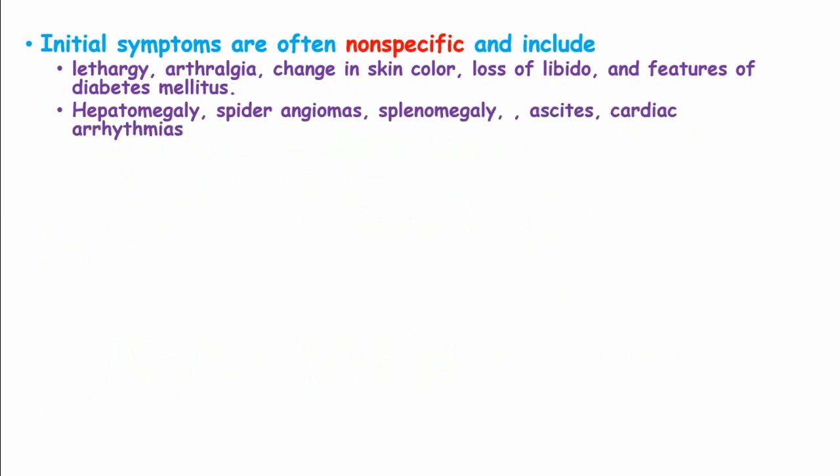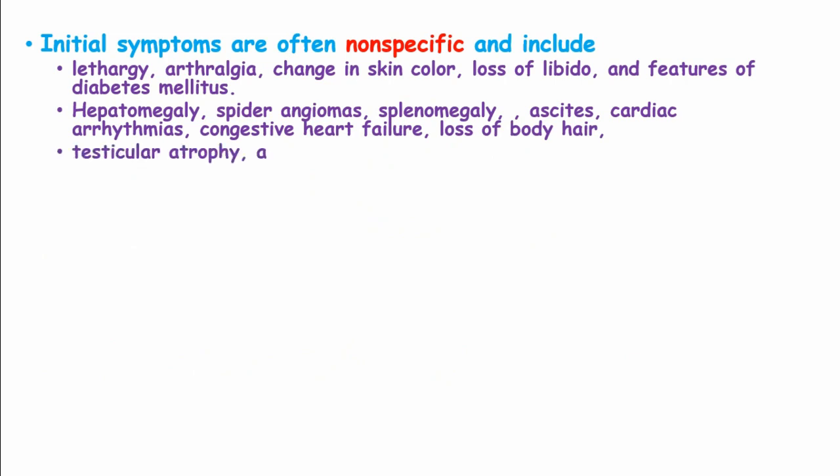Spider angiomas, splenomegaly, ascites, cardiac arrhythmias, congestive heart failure, loss of body hair, and testicular atrophy together with jaundice are prominent in advanced disease involving the major organs of the body.